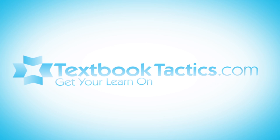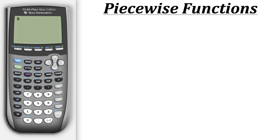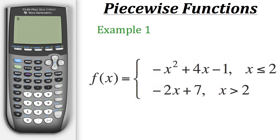This is a tutorial on how to use your calculator to graph piecewise functions. Let's start off with the first example. We have a function that equals negative x squared plus 4x minus 1, as long as x is less than or equal to 2, and it also equals negative 2x plus 7 whenever x is greater than 2. Now let's put this into our y equals so we could graph it.